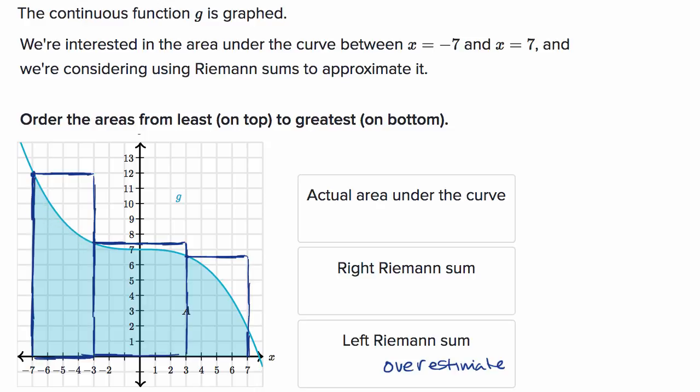And so you get left with all of this extra area that is part of the overestimate. Or this area that is larger than the actual area that you're trying to approximate.